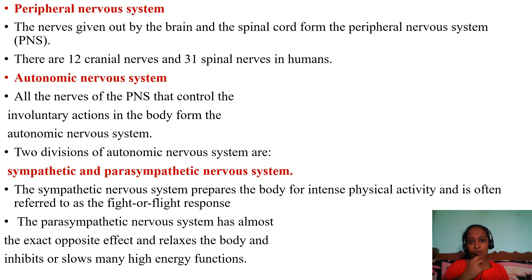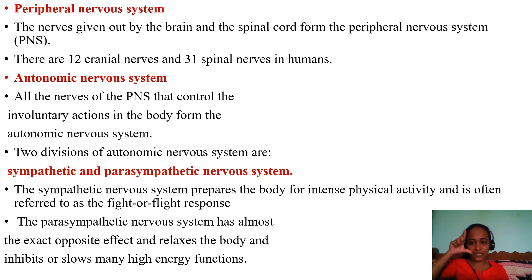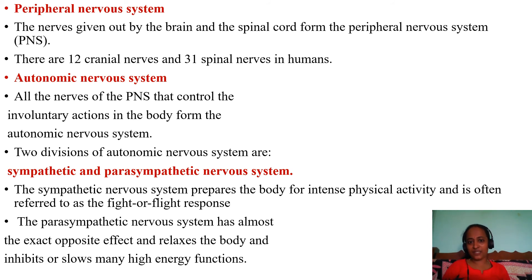The autonomic nervous system consists of all nerves of the PNS that control involuntary actions. It has two divisions: sympathetic and parasympathetic. They perform opposite functions — for example, in bright light the pupil constricts (parasympathetic), while near a close object the pupil dilates (sympathetic). The sympathetic nervous system prepares the body for intense physical activity, known as the fight-or-flight response. The parasympathetic nervous system has the opposite effect, relaxing the body and inhibiting high-emergency functions.